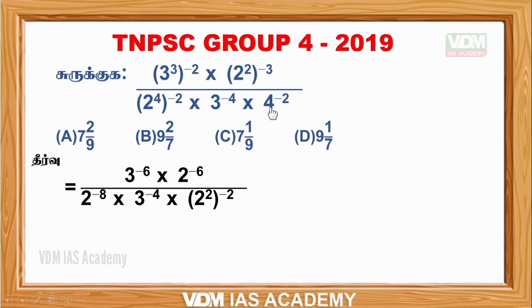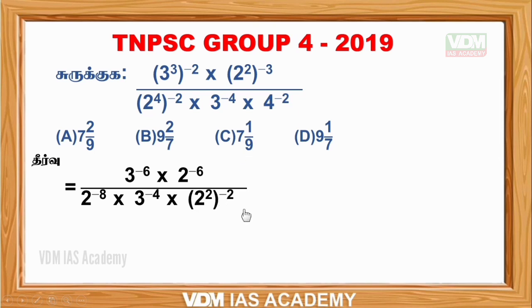So we have 2 squared. Only if we have 2 squared, we will take the rule where we multiply by 3, 2, 2, and 3. So now 2 power minus 2 squared. We have 2 power minus 4 in the first step.